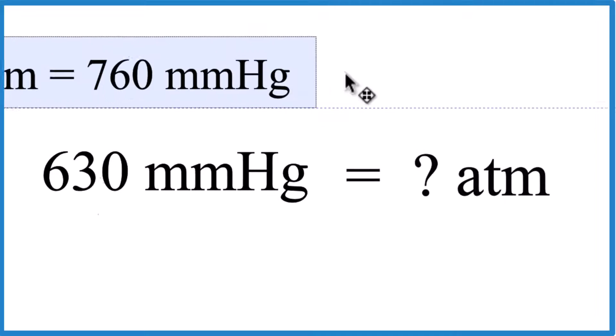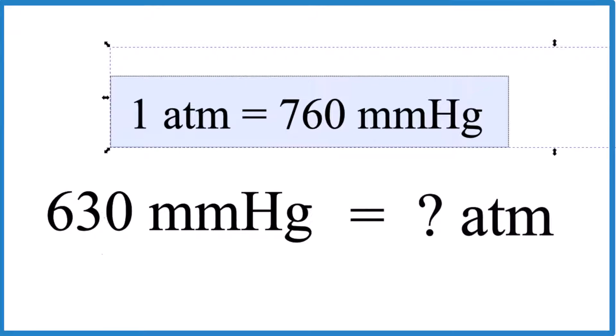So first off, you've got to have it memorized that one atmosphere is 760 millimeters of mercury, or you could look it up.